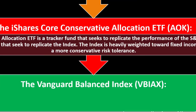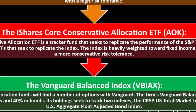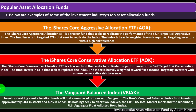The Vanguard Balanced Index Fund (VBIAX) is another option. Investors seeking asset allocation funds will find a number of options with Vanguard. The firm's Vanguard Balanced Index Fund invests approximately 60% in stocks and 40% in bonds. Its holdings seek to track two indexes: the CRSP U.S. Total Market Index and the Bloomberg U.S. Aggregate Float Adjusted Bond Index.